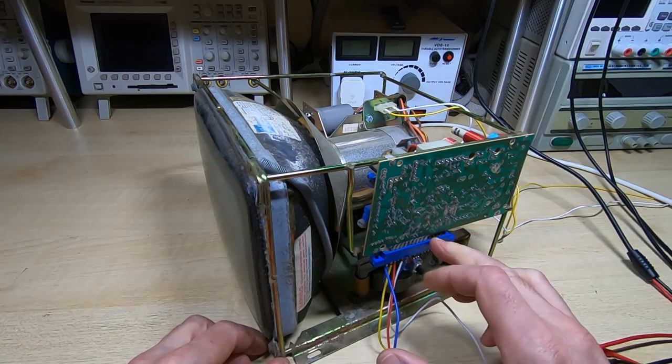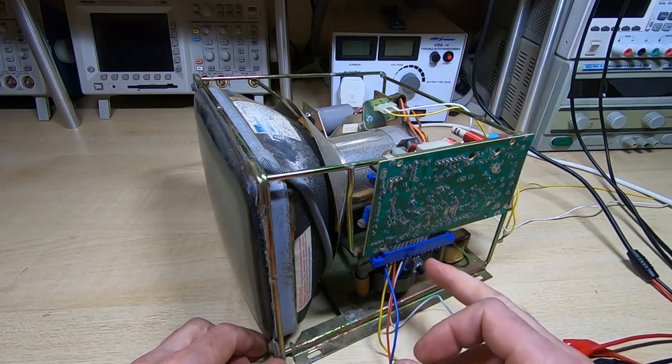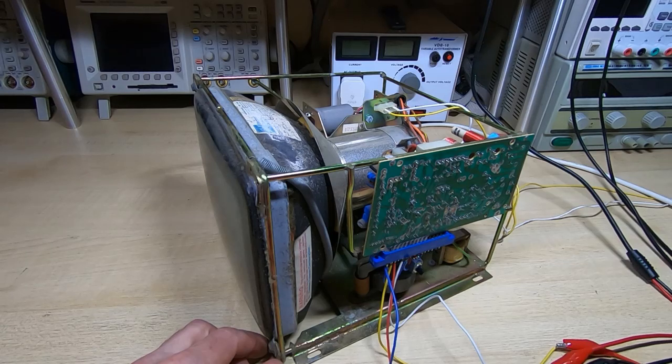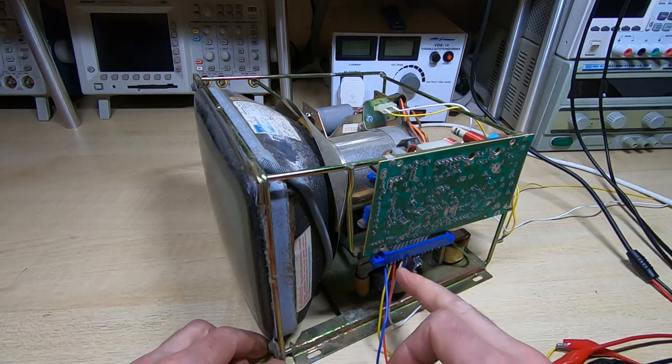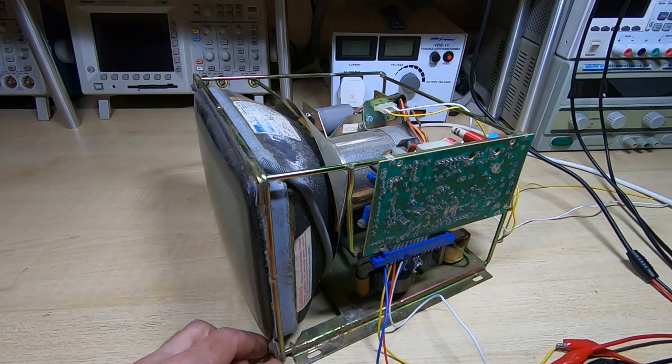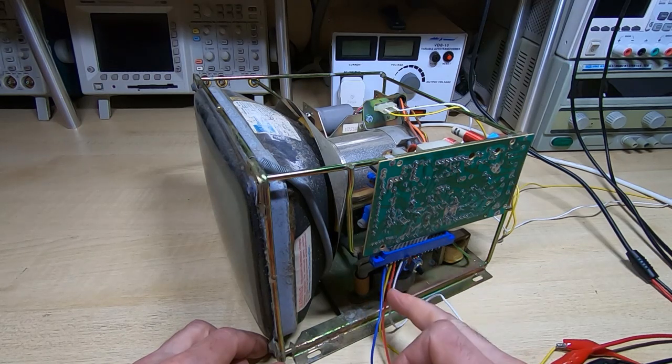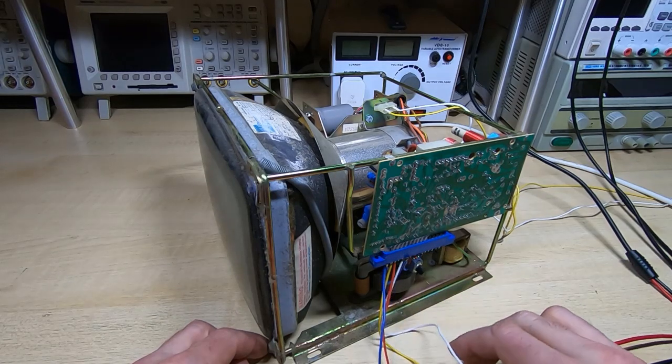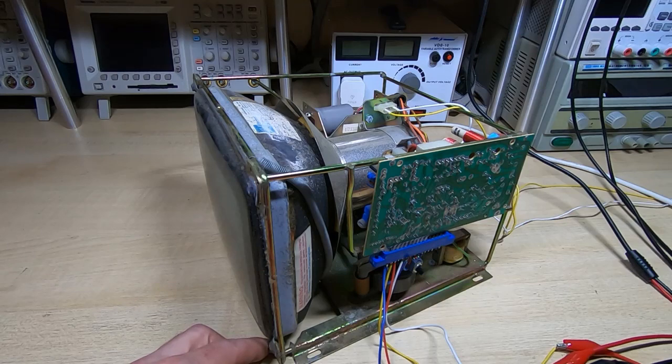That then just plugs onto the connector that would normally go to the machine itself. And all we have going to this is we have a pot for the external brightness control. If you don't fit that you will get nothing on the CRT because the brightness will effectively be turned right down all the time. We then have ground, it is a common ground for the three inputs that we are going to be applying. We then have horizontal drive, the video input and vertical drive. And it is just really making sure that I select suitable frequencies for these signals on the signal generators.